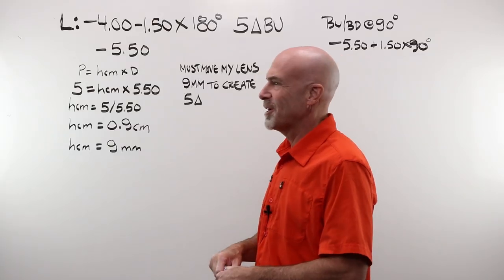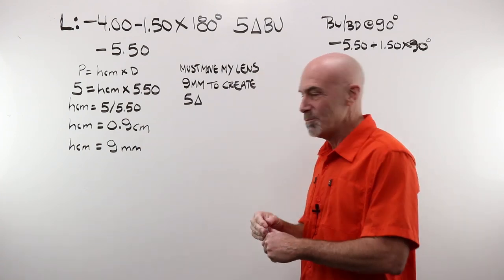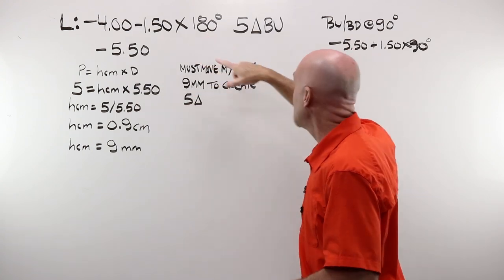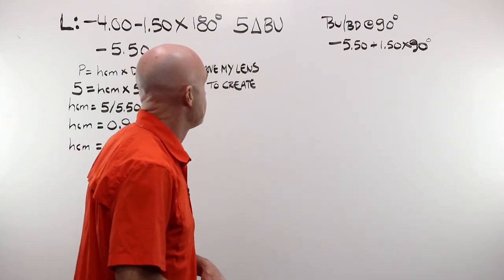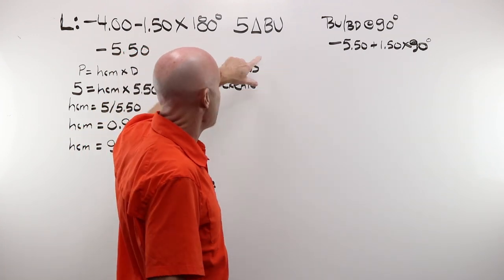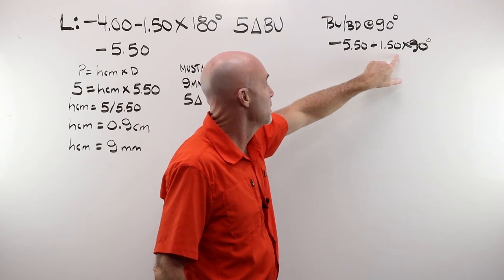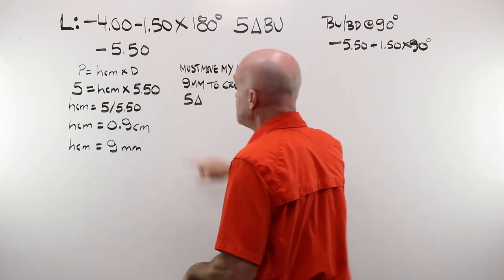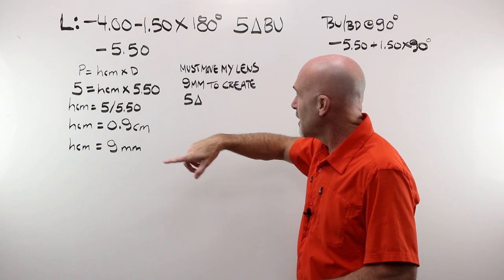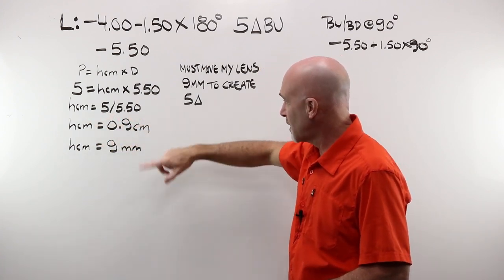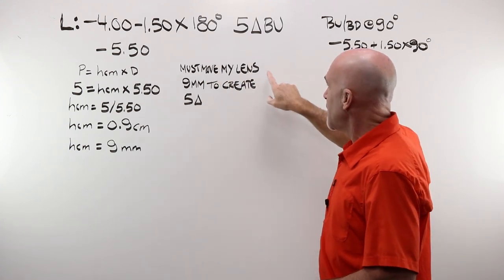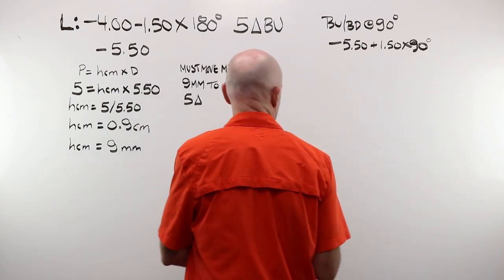Example number three. I kind of forgot to mention flat transposition, but I certainly did mention the powers in oblique meridians formula. This time we have a left lens. The lens power is a minus four, minus 150 axis 180 with a request for five diopters of base up prism. Now base up, base down prism runs along the 90th meridian, not the zero 180. So in this case, we're just going to do simple flat transposition, which gives us a minus 550 plus 150 at 90. Now I know what my power is at 90. Minus 550. Now I can run with this. P is equal to HCM times D. Five is equal to HCM times 5.50. HCM is equal to 5 divided by 5.50. HCM is equal to 0.9 centimeters. H is equal to 9 millimeters. A lot of movement. I must move my lens 9 millimeters to create 5 diopters.